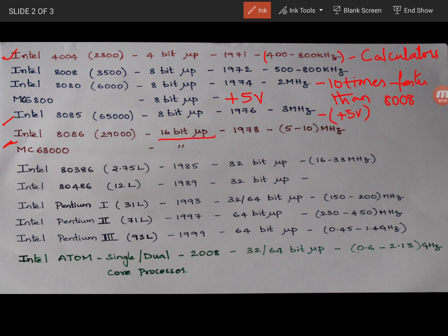Very important. Intel came up with 16 bit microprocessor which is Intel 8086 with 29000 transistors which was running between 5 to 10 megahertz. Usually 5, 8 and 9 megahertz. And at the same time even Motorola also came up with MC68000 which is also a 16 bit microprocessor.